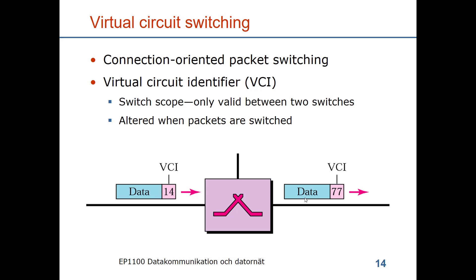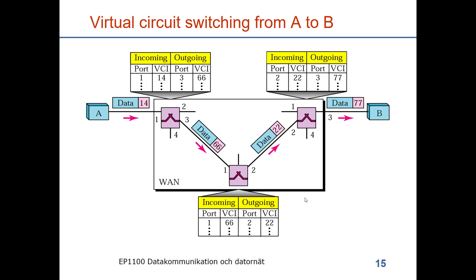Here is a bigger example. The virtual circuit is implemented by tables in three switches connecting A to B over four links. A packet arrives at switch one on port one with virtual circuit identifier 14; the table maps it to port three with identifier 66. Switch two receives it on port one with identifier 66 and maps it to port two with identifier 22. Switch three receives it on port two with identifier 22 and maps it to port three with identifier 77. The circuit is identified by both the incoming port and the virtual circuit identifier.